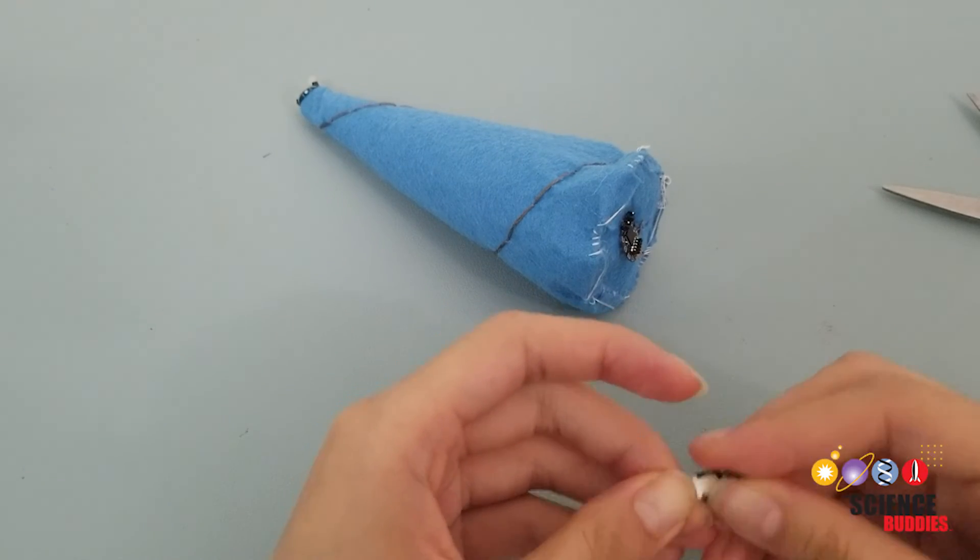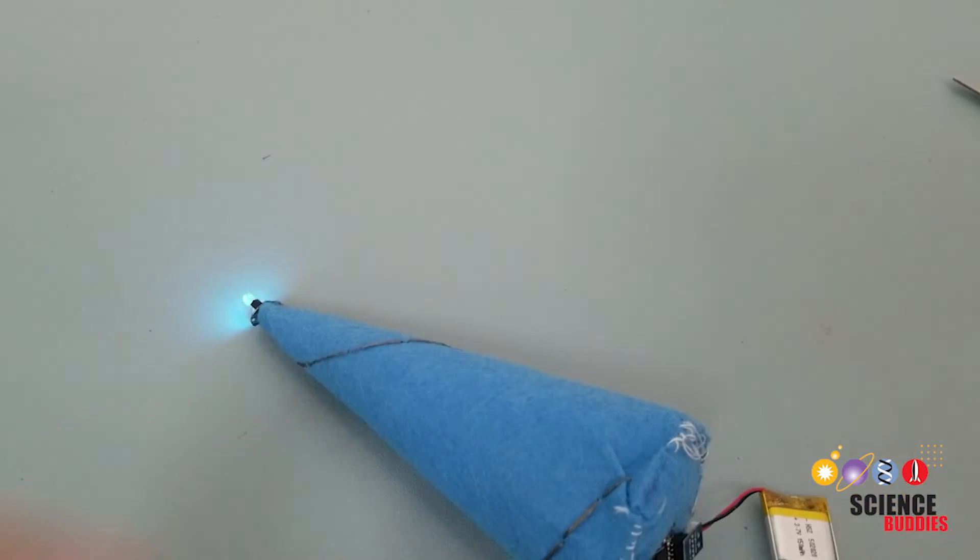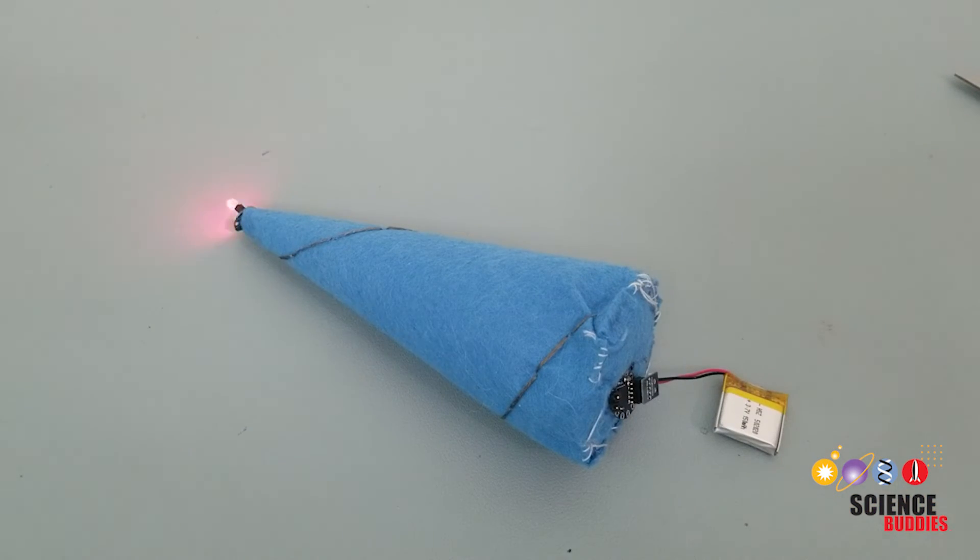Finally, connect your LiPo battery using the battery adapter. Your LED should be working and changing colors and this should confirm that your circuit is working.